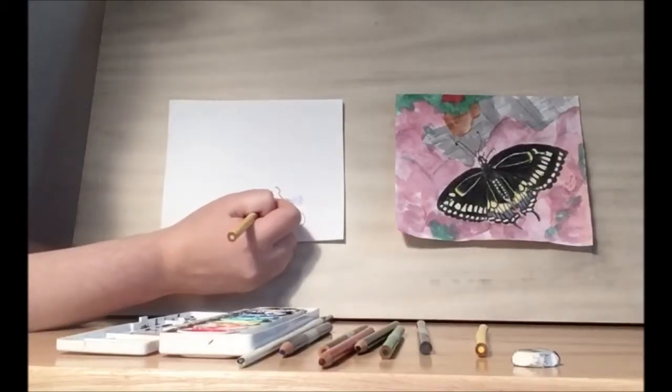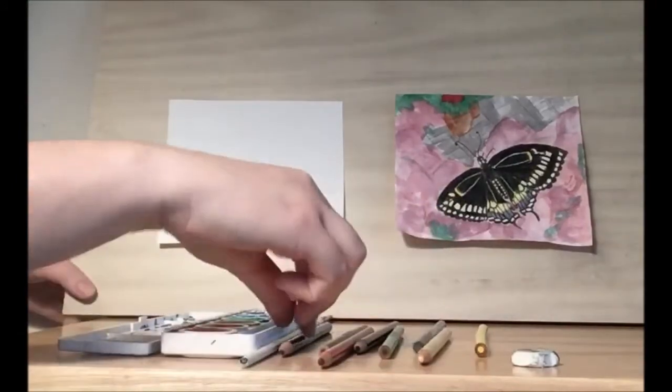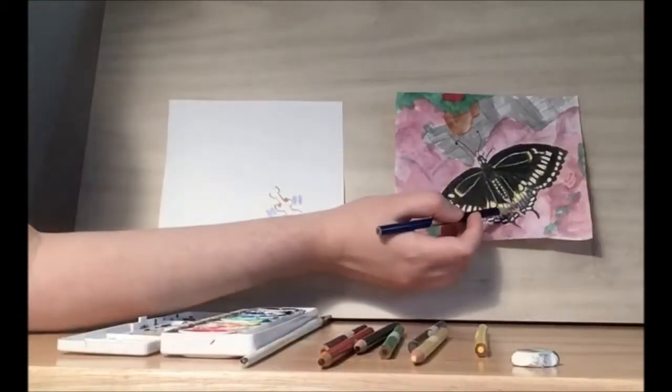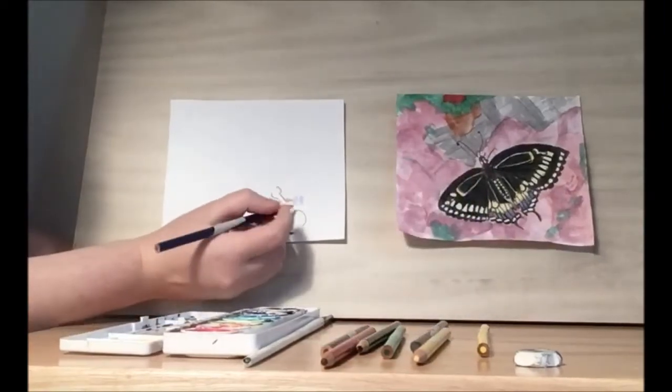Then we have the smaller tan. So I have one, two, three, four, five, six. I also count one, two, three, four, five, six of the blues.